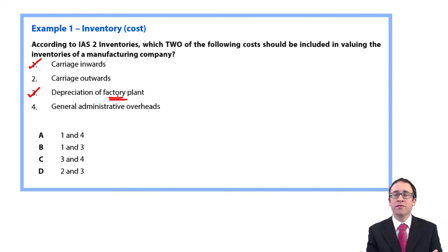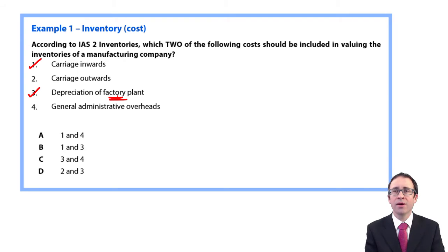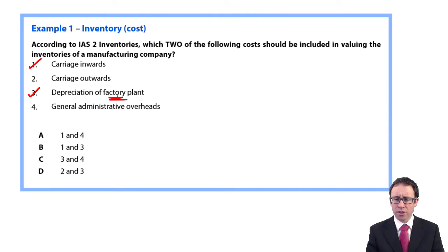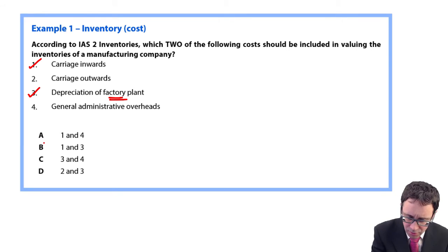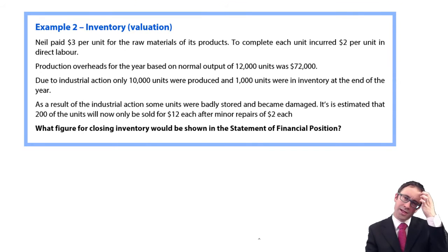You've then got your general administrative overheads — the head office overheads — which have nothing to do with manufacturing. That's where we carry out the day-to-day business: the finance function, the HR function, the marketing function — nothing to do with the production of inventory. So that is not an includable cost. Therefore, the answer is B. That would be a nice straightforward question in the exam — the easiest two marks you'd ever get.